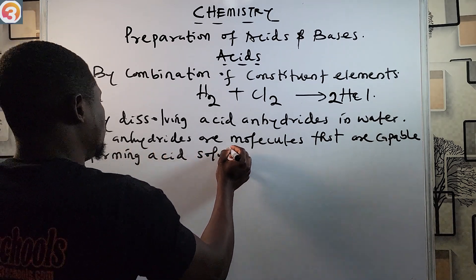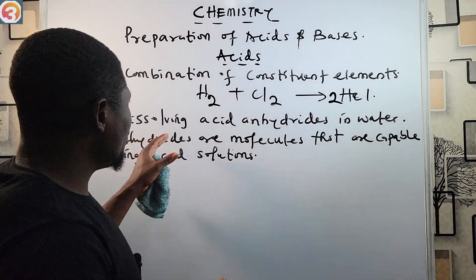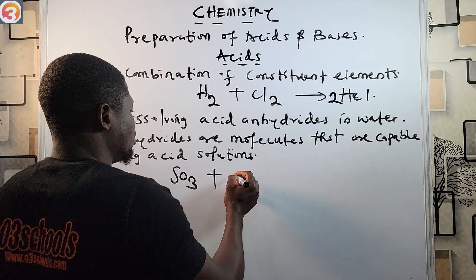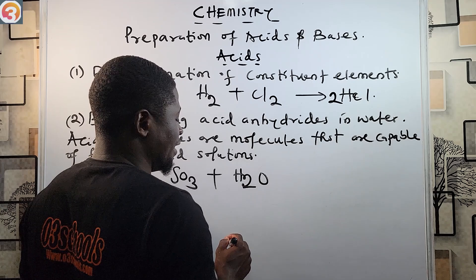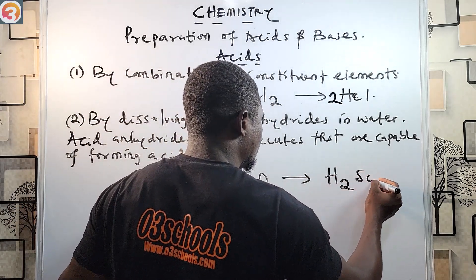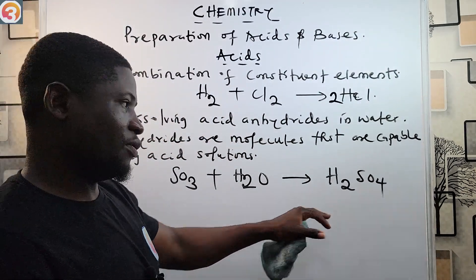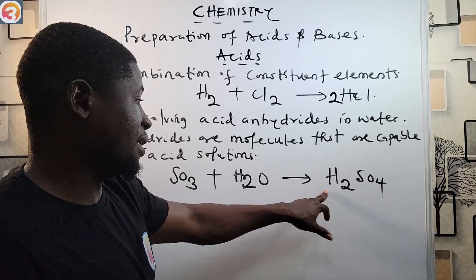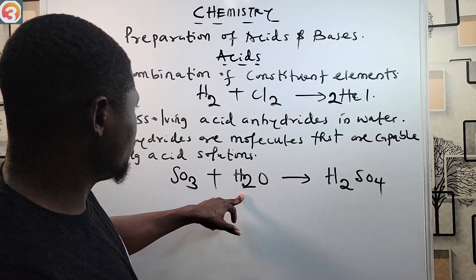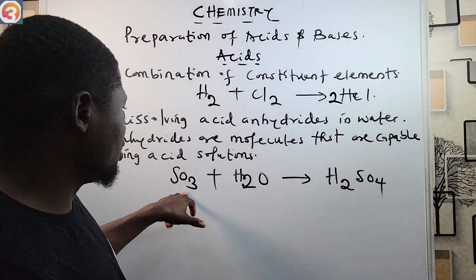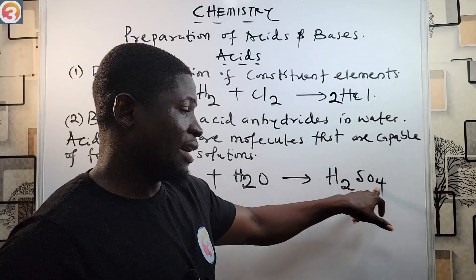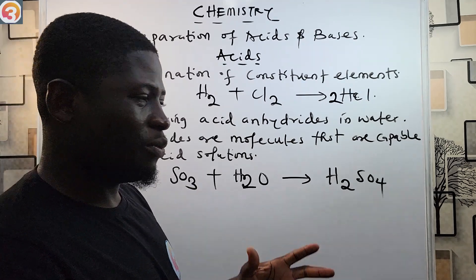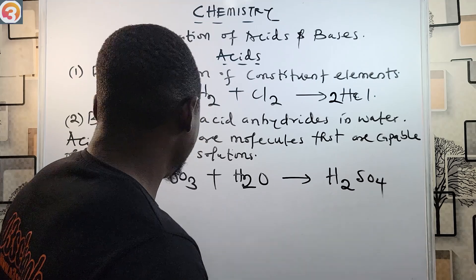When you dissolve acid anhydrides in water, you can use that method to prepare an acid. For example, an anhydride like SO₃ reacting with water gives us H₂SO₄. Let's check the balance: there are four oxygen atoms on the left (one from H₂O plus three from SO₃), two hydrogen atoms on each side, and one sulfur atom on each side — so the equation is well balanced. This is how we prepare H₂SO₄ by dissolving an acid anhydride in water.